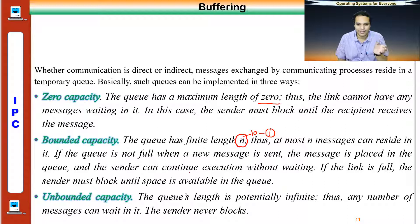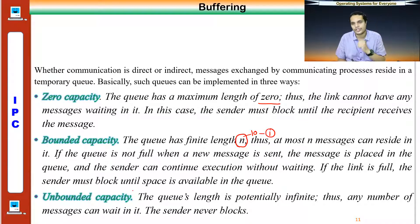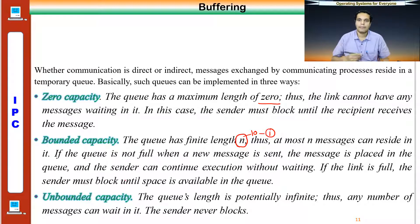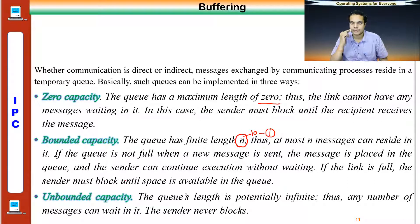Third is unbounded buffer, which is potentially infinite. Here the sender never blocks — it keeps on working and never goes into a blocked state. These are the three different variations of buffer implementation in message passing. These messages are generally temporary.